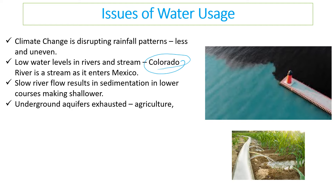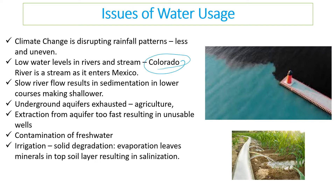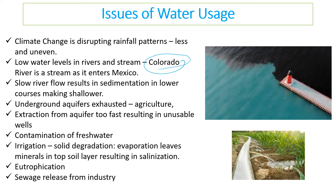Underground aquifers are becoming exhausted due to agriculture, with extraction happening too fast to be sustainable. Irrigation is causing degradation as solids move into water. Evaporation from irrigation water left on fields removes the top layer of minerals, leading to salinization of the soil. Eutrophication is also occurring — generally caused by sewage or fertilizer run-off — and will be covered in detail later.